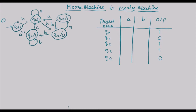Now let's see what transition is happening on q0 when we apply input a — it's going to q2 with a. And it's going to q1 with b. Q1 is going to itself with a. Q1 is going to q4 with b.